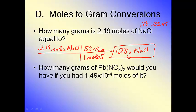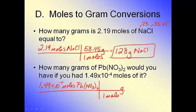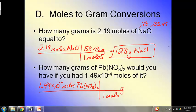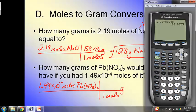So now let's go. How many grams of lead nitrate would you have if you had 1.49 times 10^-4 moles of it? So once again, start by writing your given Pb(NO3)2. Draw the line. One mole goes on the bottom. The weight from the periodic table goes on the top. Now I'm going to need my calculator to do this.